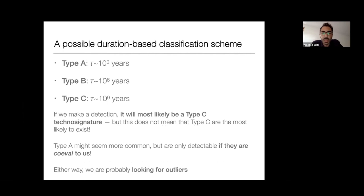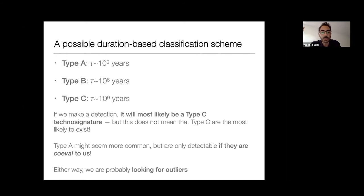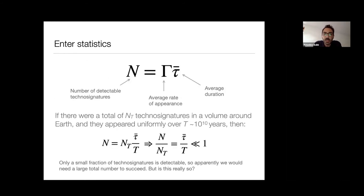Let me fix the idea with three kinds of possible durations, because duration is the crucial parameter. Suppose we have Type A, Type B, and Type C technosignatures, with durations of 10 to the 3, a million, and a billion years respectively. What we can see is that it would be most likely that if we detect a civilization, it would be a Type C technosignature. This does not mean Type C are the most likely to exist, but simply that the causal filter picks them up with higher probability.